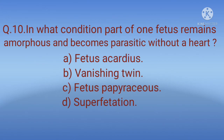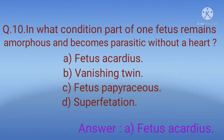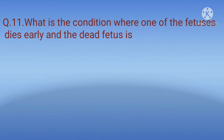Question 10: In what condition does part of one fetus remain amorphous — having no definite shape, form, or structure — and become parasitic without a heart? Options: A) Fetus acardiacus, B) Vanishing twin, C) Fetus papyraceus, D) Superfetation. The correct option is A, fetus acardiacus. This fetus develops without a heart and receives blood supply from its twin through vascular connections on the placenta.